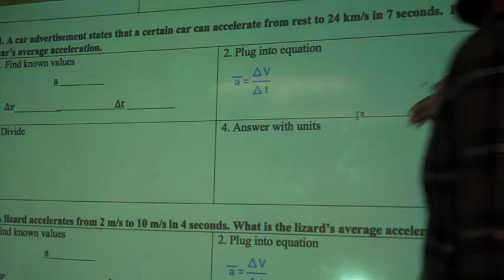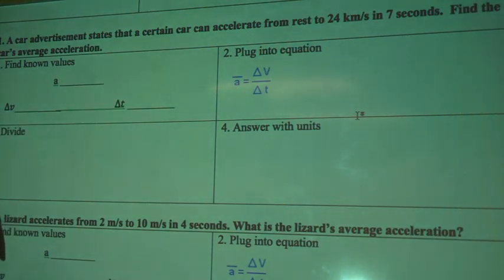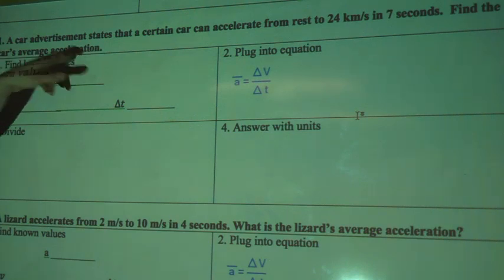Alright, for this first question, we're looking at a car advertisement that states a certain car can accelerate from rest to 24 kilometers per second in 7 seconds. Find the car's average acceleration.